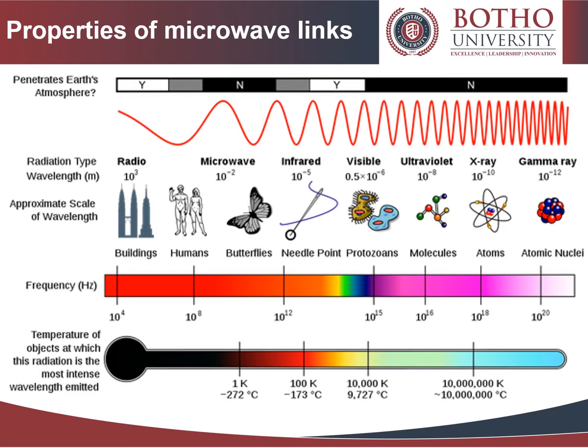The image typically shows the wavelength of each radiation type. Looking at the microwave spectrum, you can see the approximate scale of wavelength and frequency, as well as the temperature of objects at which this radiation is the most intensely emitted wavelength.